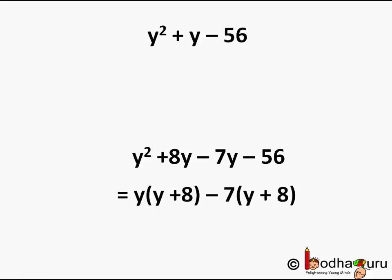For the first two terms, we get y into (y + 8) and for the second two terms, we can take minus 7 as the common. We get -7 into (y + 8).